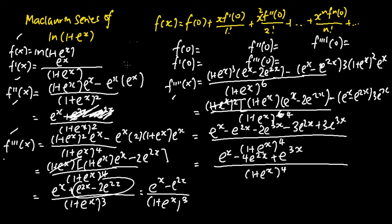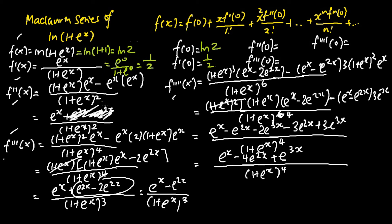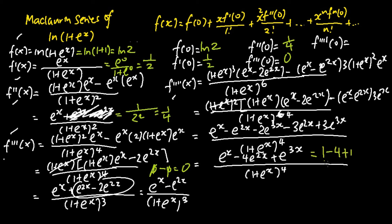The next step is to substitute x = 0 into each function. f(0) = ln(1 + 1) = ln 2. f'(0) = e^0 / (1 + e^0) = 1/2. f''(0) gives 1/(2^2) = 1/4. f'''(0): substituting x = 0 gives e^0 minus e^0, which is just 0. f''''(0): substituting x = 0 gives 1 - 4 + 1 over 2^4, which equals negative 1/8.